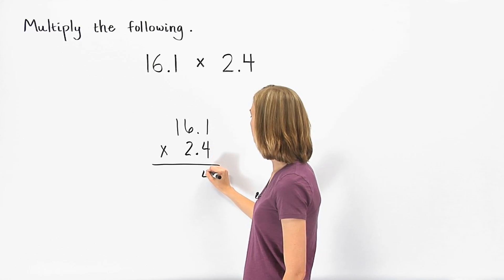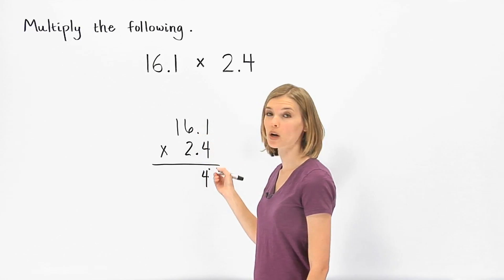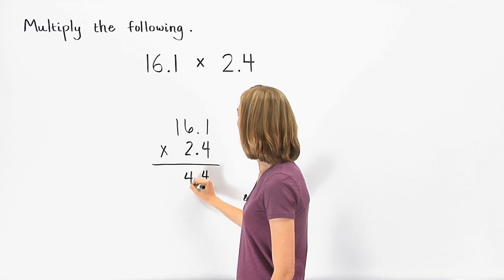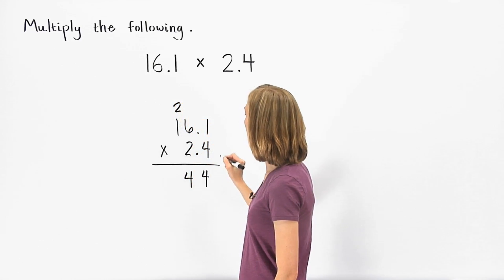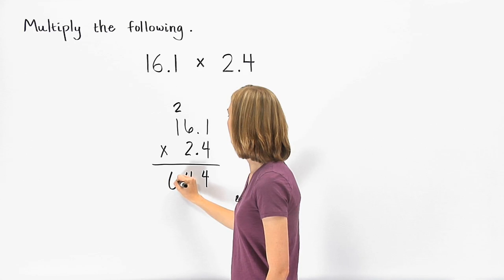4 times 1 is 4. 4 times 6 is 24, so we bring down the 4 and carry the 2. 4 times 1 is 4, plus 2 is 6.